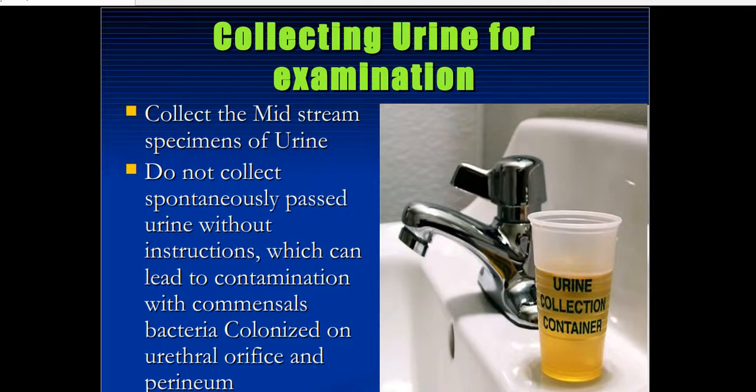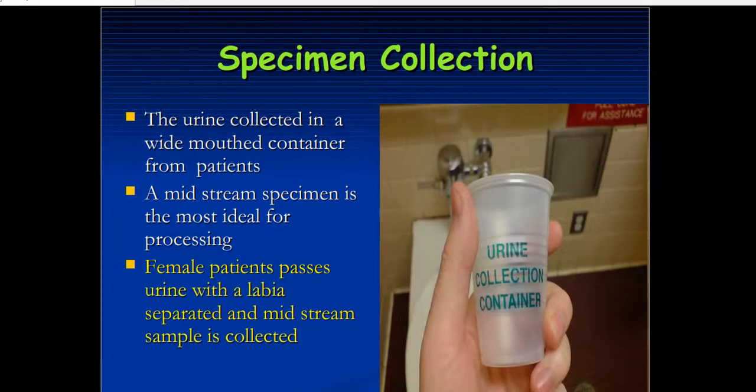Urine is mainly collected to assess urinary infections or kidney infections. A sterile or leak-proof container should be provided to the patient for collection. Urine is collected in a wide-mouth container. A midstream specimen is the most ideal for processing. When collecting, void the initial urine first and then collect the midstream urine in the container. Once the container has an adequate quantity, close it and void the remaining urine. A midstream specimen is ideal for processing the urine sample.